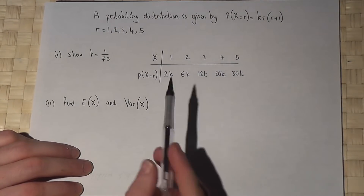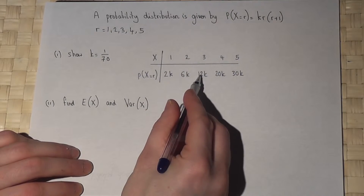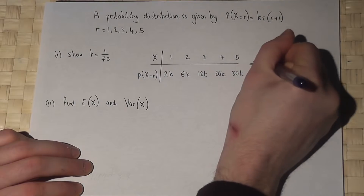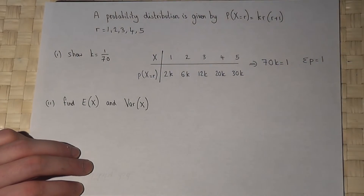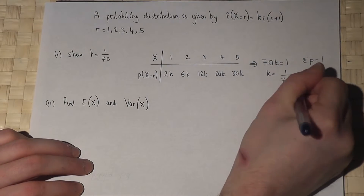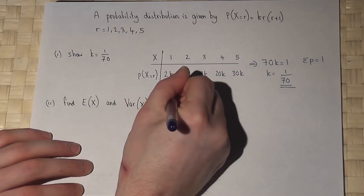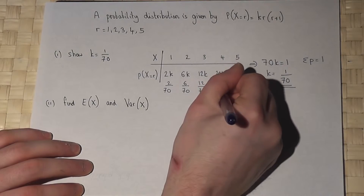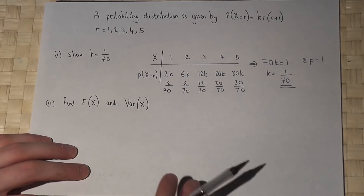We know that the sum of these values must equal 1. So 2 plus 6 is 8, plus 12 is 20, plus 20 is 40, plus 30 equals 70. This tells me that 70k must equal 1, because the sum of our probabilities must equal 1. Therefore k must equal 1 over 70. So the probabilities are 2/70, 6/70, 12/70, 20/70, and 30/70, and these will come in useful in the second part of the question.